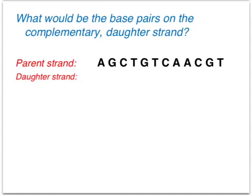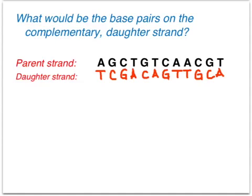Here's the original parent strand with its DNA sequence. Take a minute, write the parent strand in your notes, and then make the complementary base pairs you would find in the daughter strand. Come back and I'll have the answers for you. Hopefully you got the base pair sequencing correct — A always pairs with T, and G always pairs with C, no matter the order.